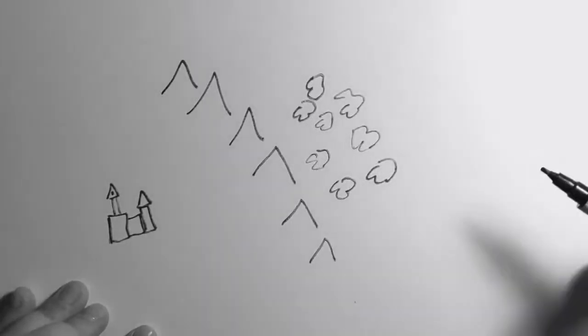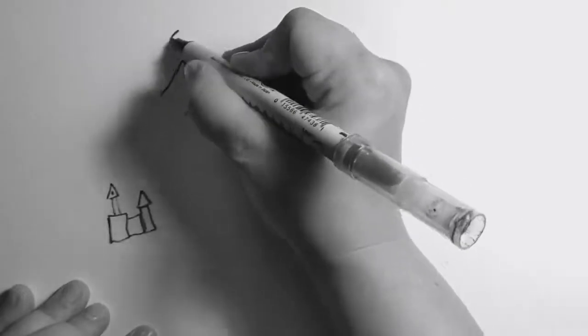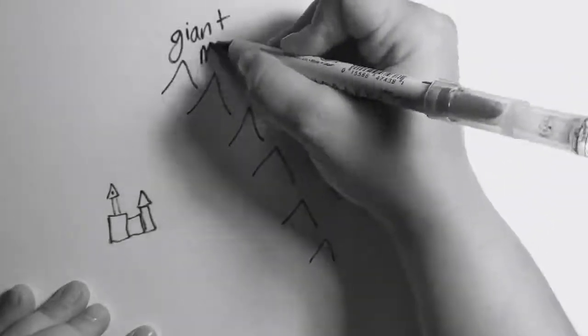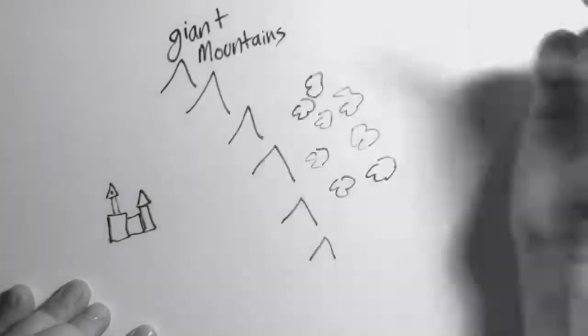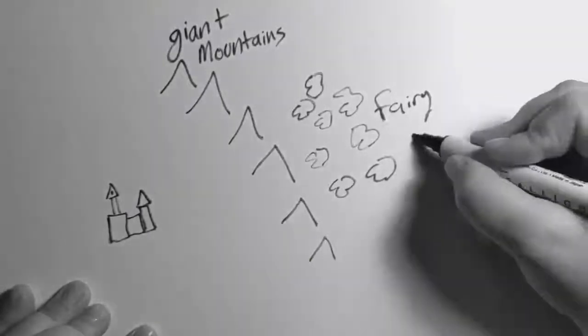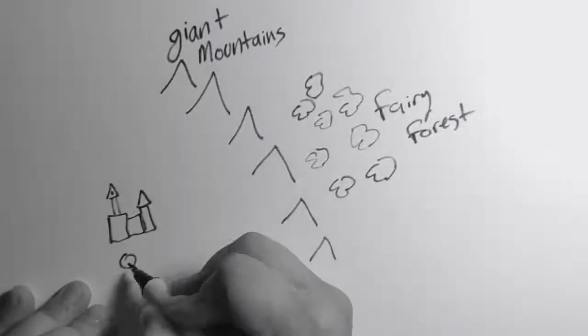It's important to write place names down. The mountains are full of giants, so I'll call them giant mountains. We have the fairy forest and the queen's castle.